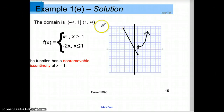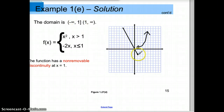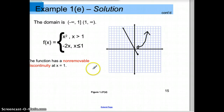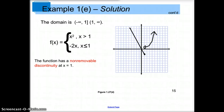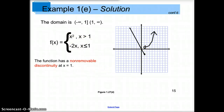In the last example, we've got a piecewise function. It's only continuous from negative infinity to 1, including 1 — it's got that solid filled-in circle for this part — and then 1 to infinity, not including 1 here. So this function has a non-removable discontinuity. There's no way to rewrite this function so that these two pieces match up.